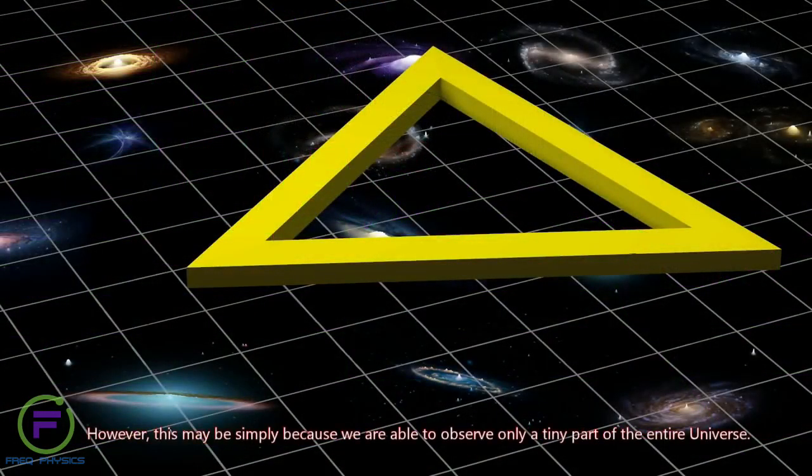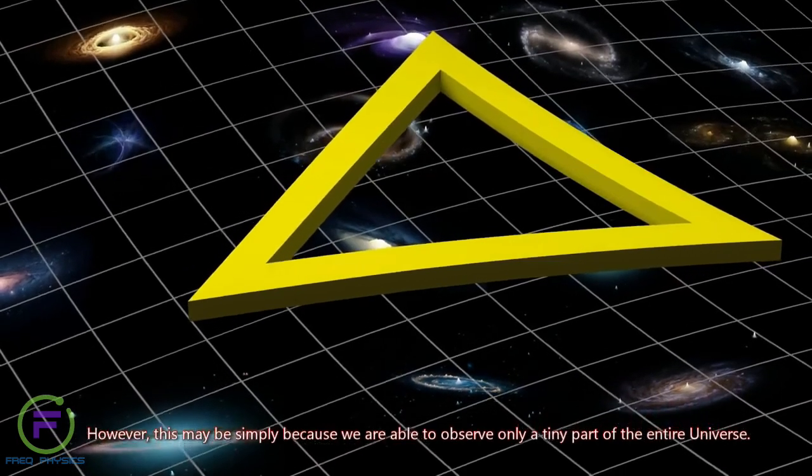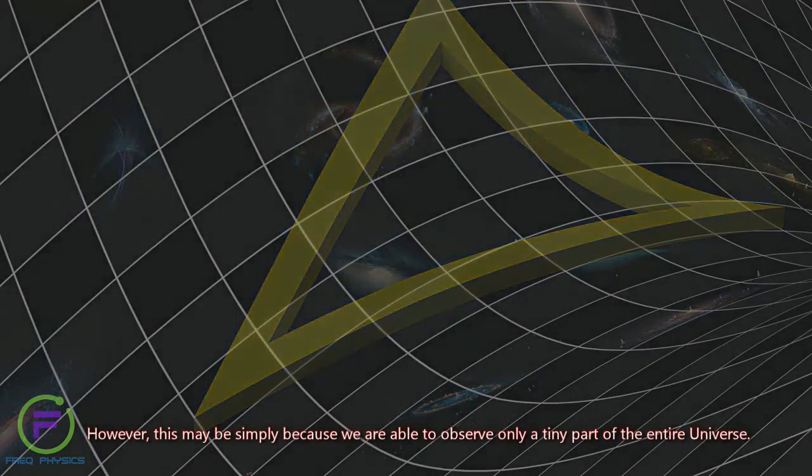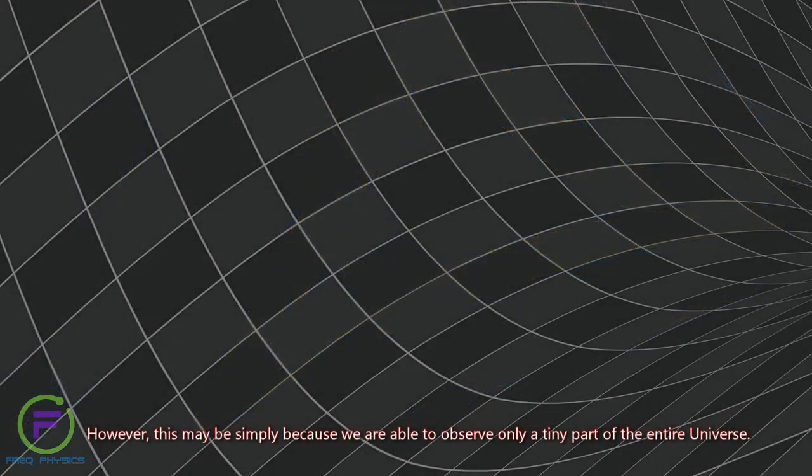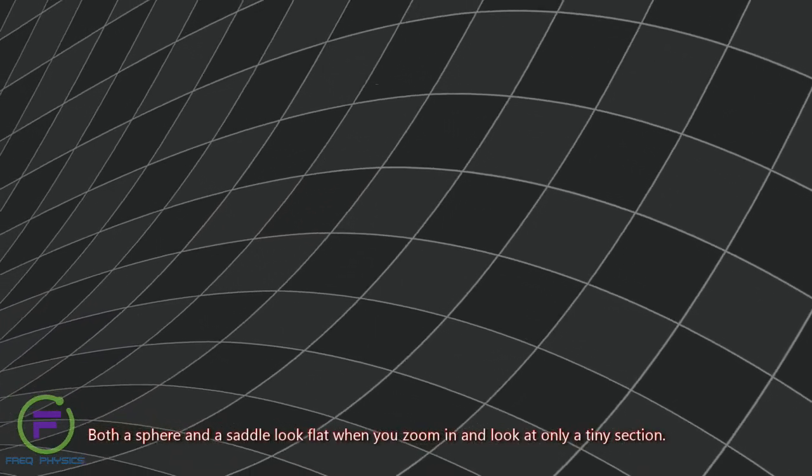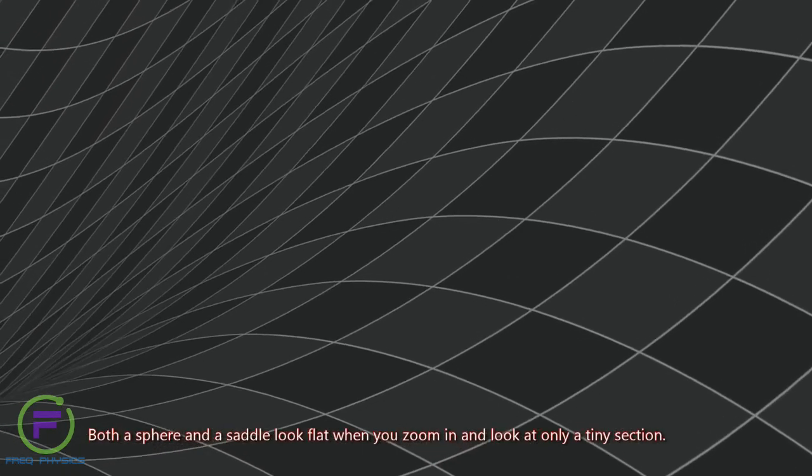However, this may be simply because we are able to observe only a tiny part of the entire universe. Both a sphere and a saddle look flat when you zoom in and look at only a tiny section.